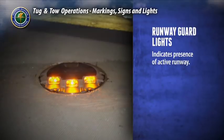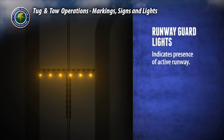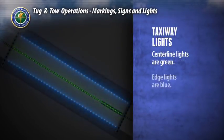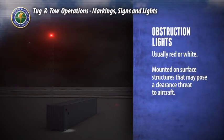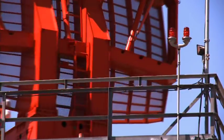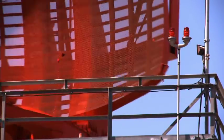In-pavement lights may also be used. Taxiway centerline lights are green. Taxiway edge lights are blue and outline the edges of taxiways. Obstruction lights are usually red or white and are mounted on surface structures or terrain that may pose a clearance or obstruction hazard to moving aircraft.